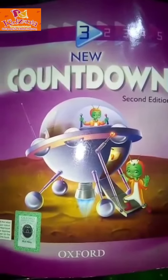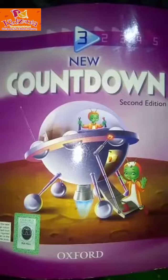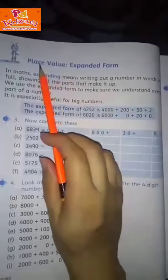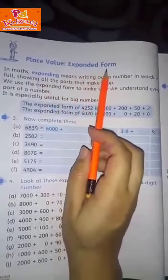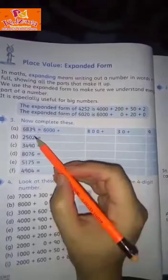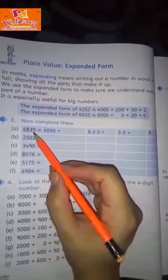Bismillahirrahmanirrahim. Assalamualaikum students, welcome to the online class. This is the lecture for Grade 3 class, New Countdown Second Edition. Open your book, page number 32. Today our topic is Place Value: Expanded Form. Expanded form means to write the number of each individual digit.